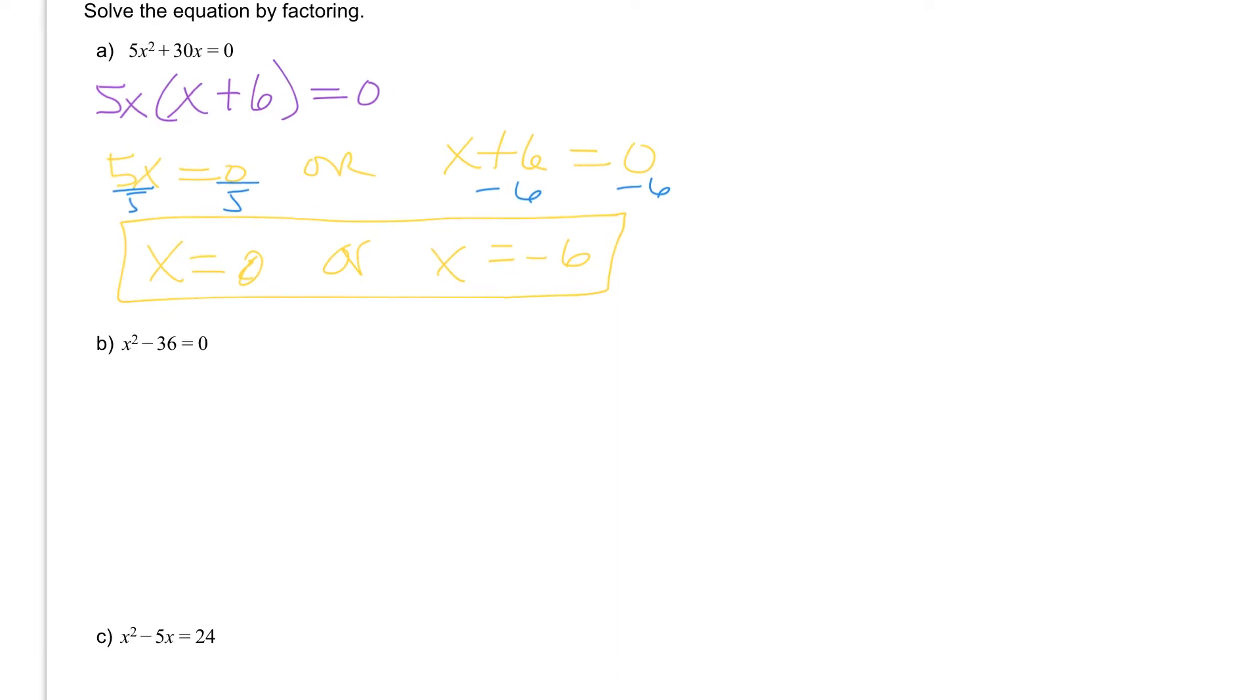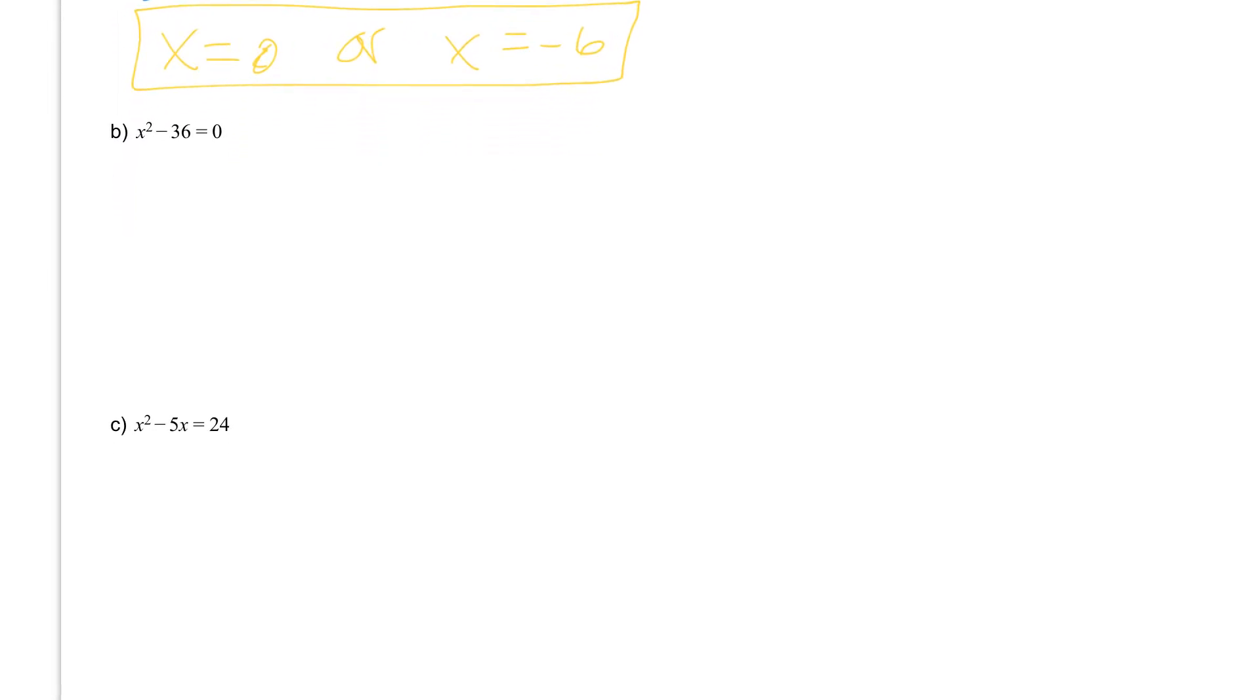Let's take a look at letter B. We have x² - 36 = 0. We should recognize that there's a subtraction sign in between two things, and these are both perfect squares. So here is a difference of squares. We can factor this as (x - 6)(x + 6), and that's set equal to zero.